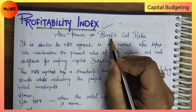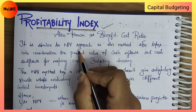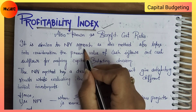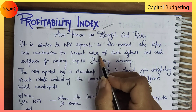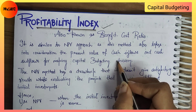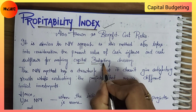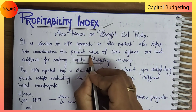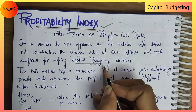The profitability index is also known as the benefit-cost ratio. This technique is similar to the NPV approach, as this method also takes into consideration the present value of cash inflows and cash outflows for making the capital budgeting decision.